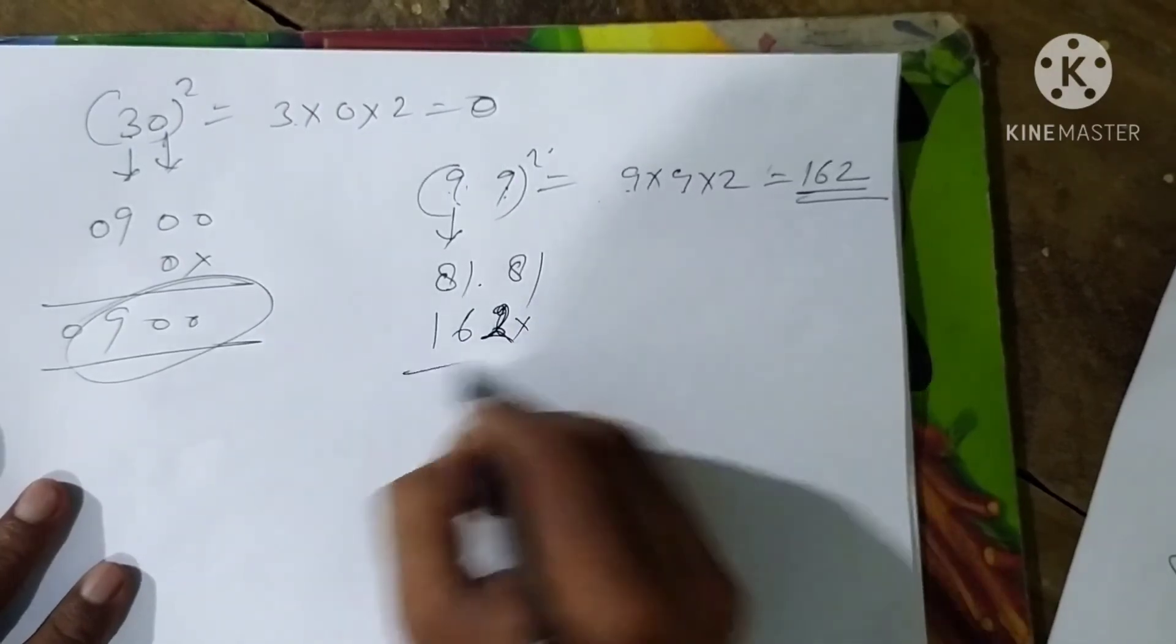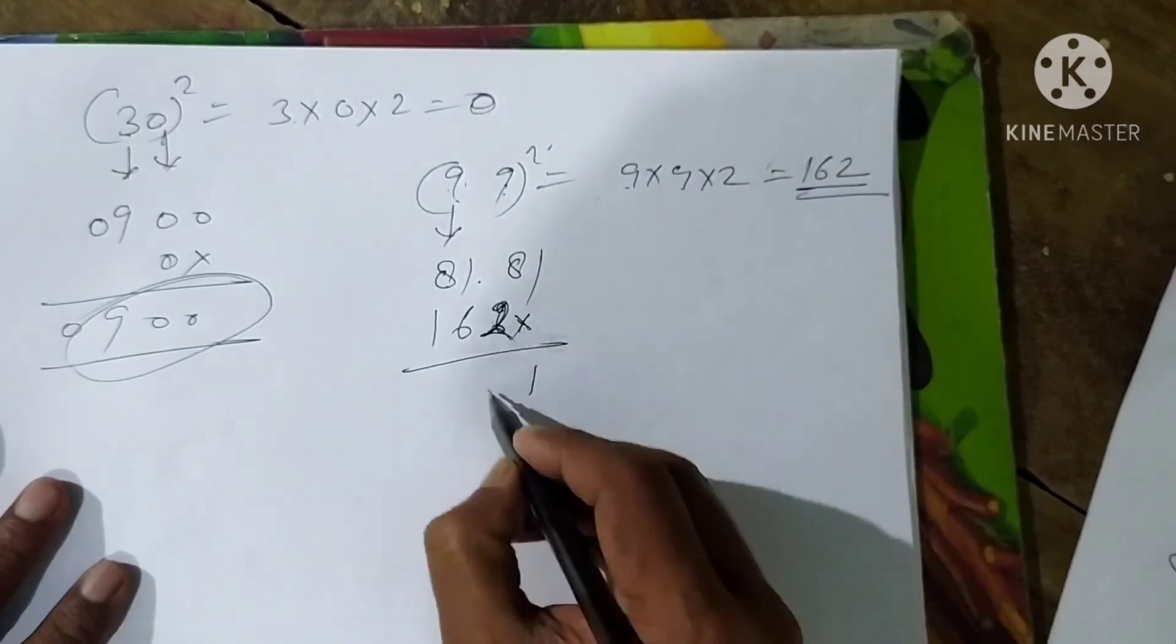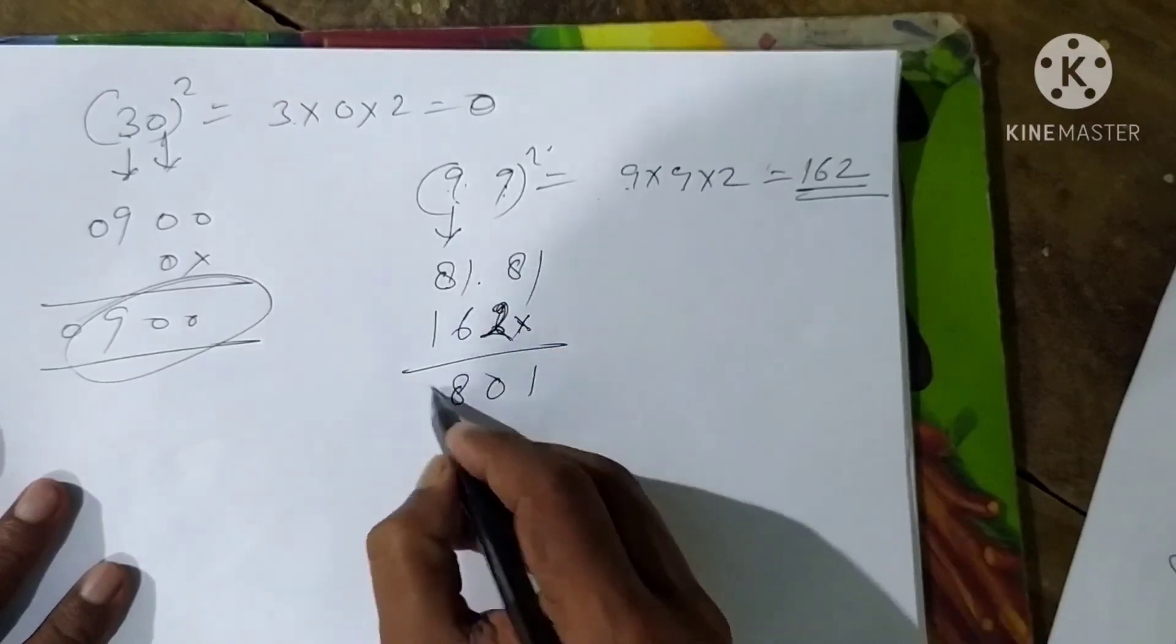This square is 162. This is 162. This is 1, this is 0, this is 8, this is 9.